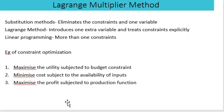Examples of constraint optimization include: maximizing utility subject to the budget constraint, minimizing cost subject to the availability of inputs, and maximizing profit subject to the production process. These are the important constraints we usually deal with in economics.